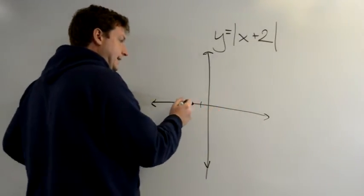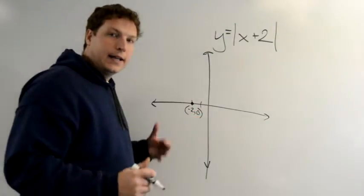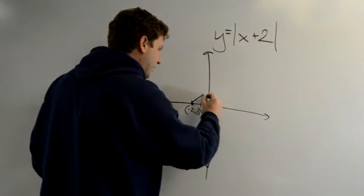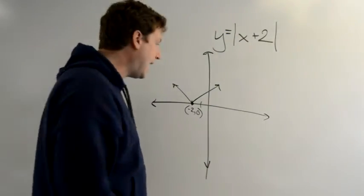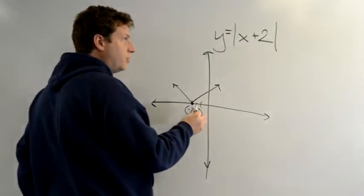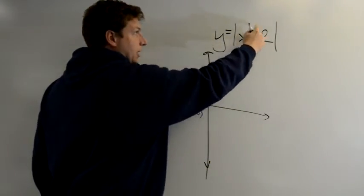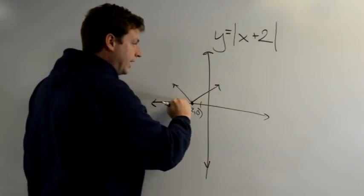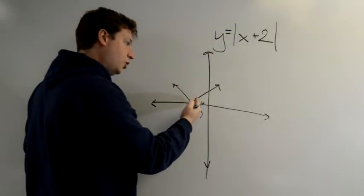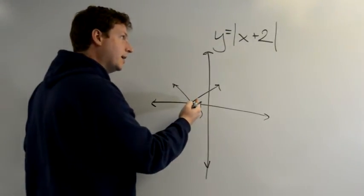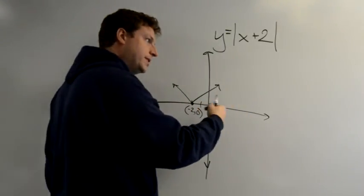And what point is that? It's negative 2, 0, and that's where I'm going to start. My graph is going to then be a mirror image of y equals the absolute value of x, just shifted to the left 2. And that's because I need to plug in negative 2 plus 2 to get 0. So where y equals 0, we haven't gone up or down at all — we've gone 2 over on my x.